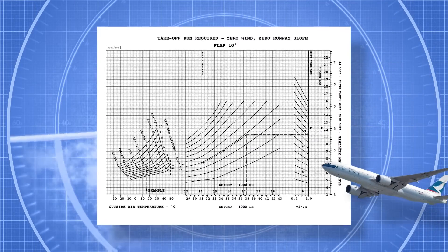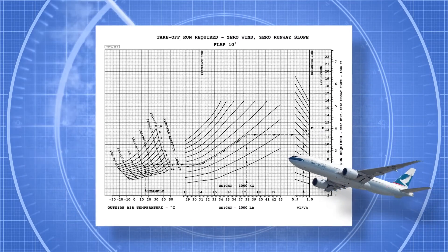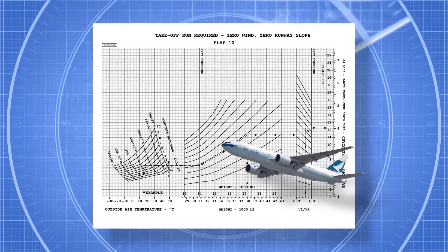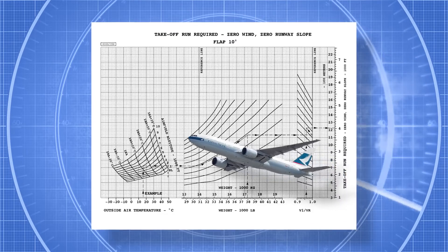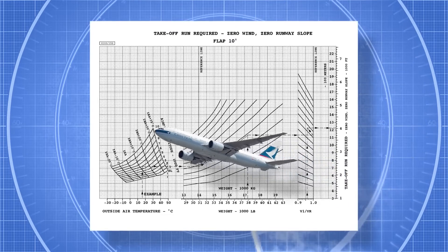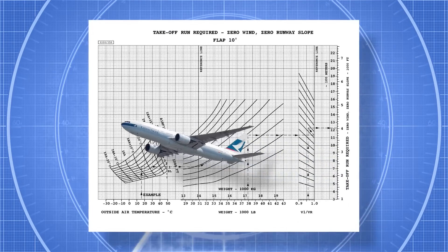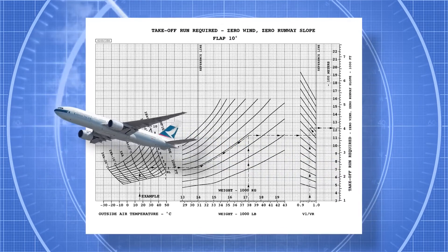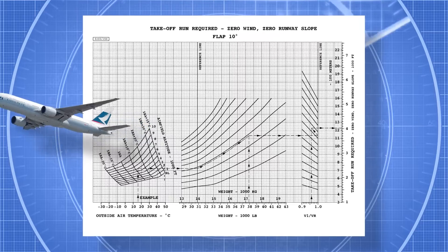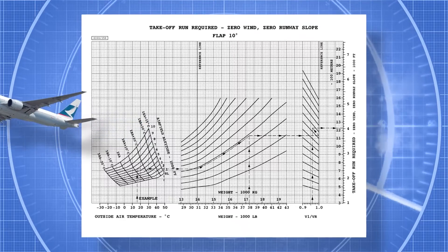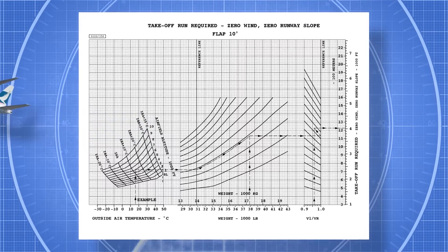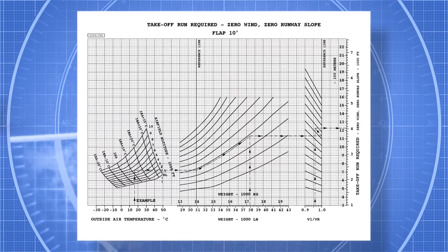Ambient temperature plays a major role in taking off. High temperatures reduce aircraft performance as it increases density altitude. This, in turn, decreases engine performance while aircraft aerodynamics are also affected.